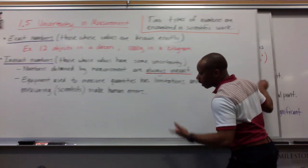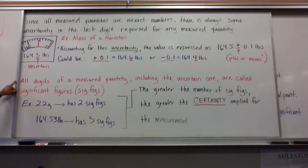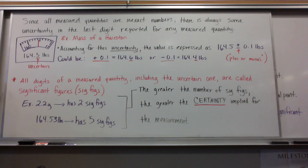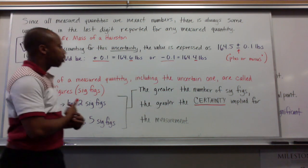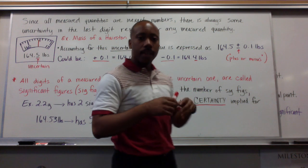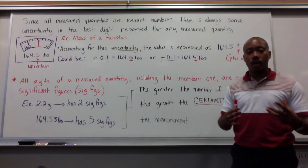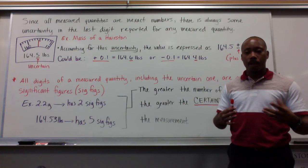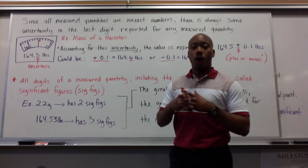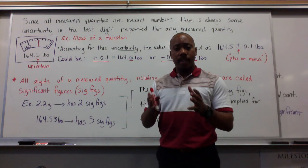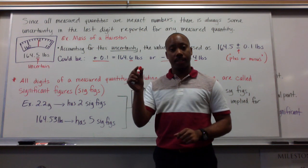So, since all measured quantities are inexact numbers, there is always some uncertainty in the last digit reported for any measured quantity. First and foremost, there's always uncertainty in all measured quantities. Where is that uncertainty? That uncertainty is in the last digit.